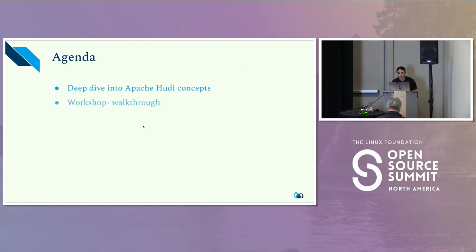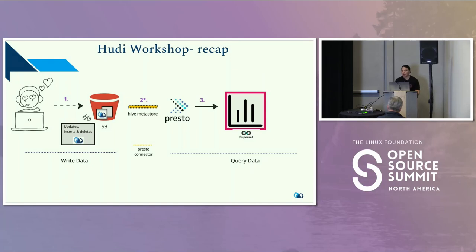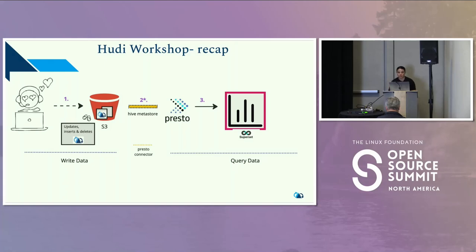We're going to talk about the different storage types that Hoodie has, walk through a bit of the workshop, and then look at the integration between Presto and Hoodie. The data set today is an e-commerce example where people are checking their cart, viewing items, adding items to cart, and removing things from the cart — so we have inserts, updates, and deletes all happening and getting stored into the S3 data lake.